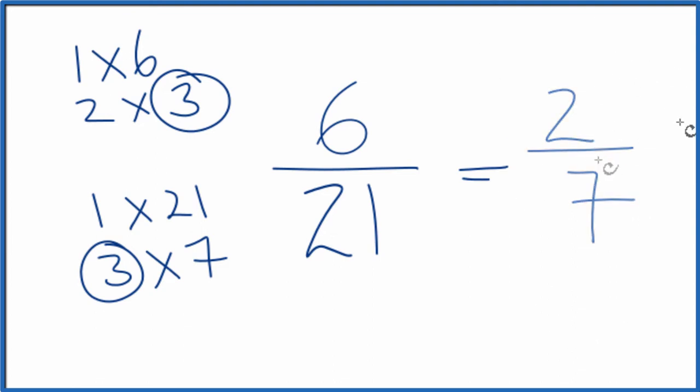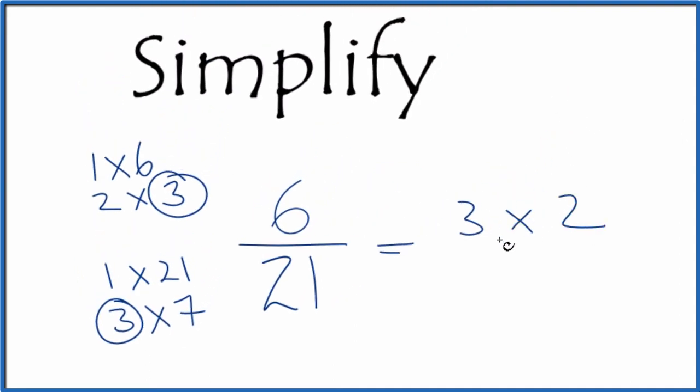There is another way to think about this. We know that 3 times 2 equals 6, and we know that 3 times 7 equals 21. So you could cross these out since they're the same, and you'll end up with 2 7ths again. Same as we got before.